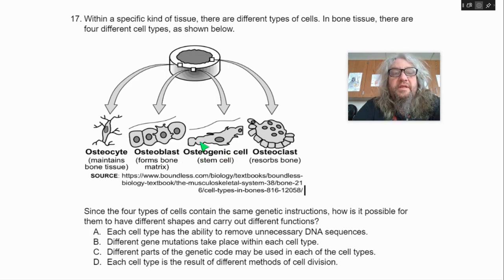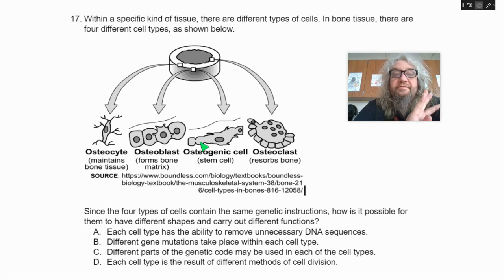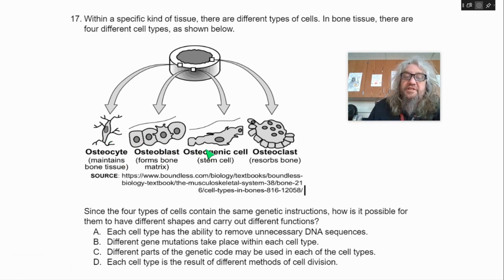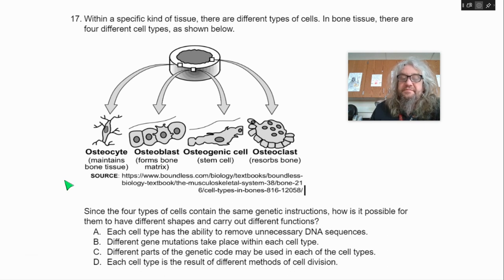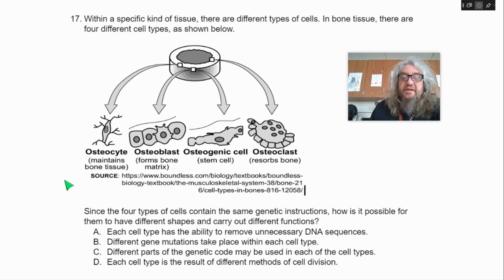Number 17. Within a specific kind of tissue, there are different types of cells. In bone tissue, there are four different types of cells — osteocyte, osteoblast, osteogenic cell, osteoclast — as shown below. Since the four types of cells contain the same genetic instructions, how is it possible for them to each have different shapes and carry out different functions? A, each cell type has the ability to remove unnecessary DNA sequences; B, different gene mutations take place within each cell type; C, different parts of the genetic code may be used in each of the cell types; D, each cell type is a result of different methods of cell division.